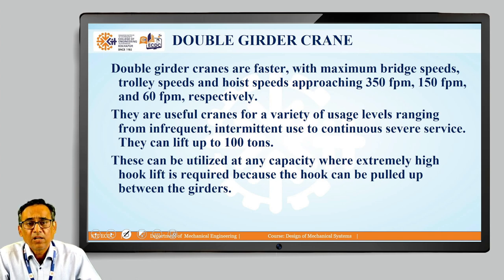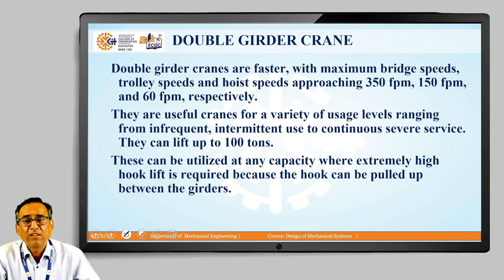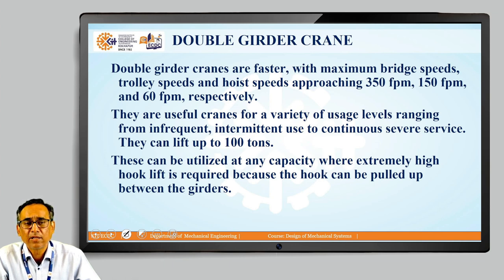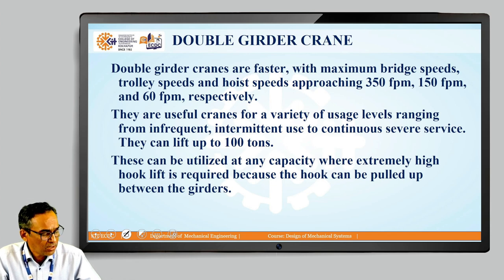Double girder cranes have a high hook lift and the hook can be pulled up. In double girder cranes, between the two girders there is a gap, and in that gap the hook can move up. So the lifting height also increases in the case of a double girder crane.